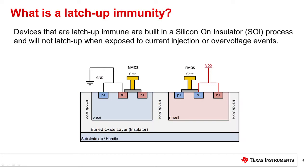To prevent a latch-up from forming, the PEP and NWL are placed on top of a buried oxide layer, which acts as an insulator from the bottom substrate. In addition, a trench oxide isolates the NMOS region from the PMOS region. Thanks to these insulation layers, no parasitic SCR between VDD and ground can be formed.